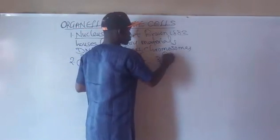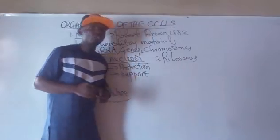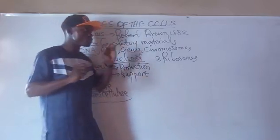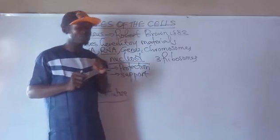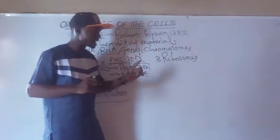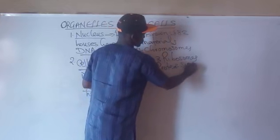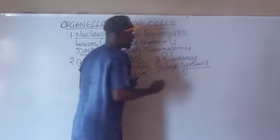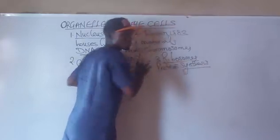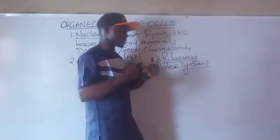Number three, we take ribosomes. Ribosomes are small or minute bodies suspended in the cytoplasm of the cell. The primary function of ribosomes is that they are responsible for protein synthesis — that is, the manufacturing or production of proteins.